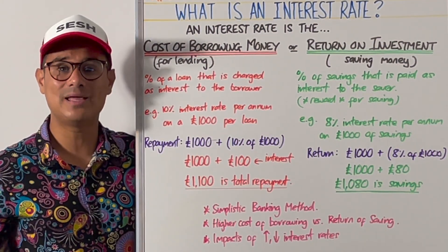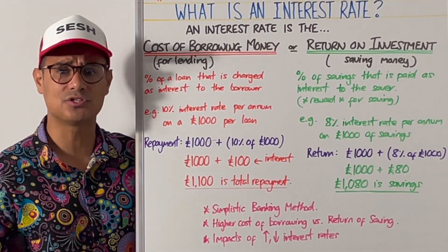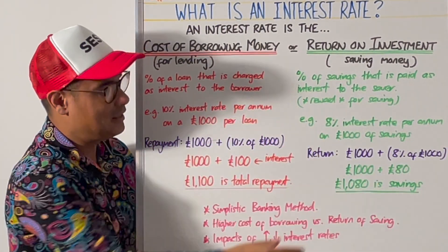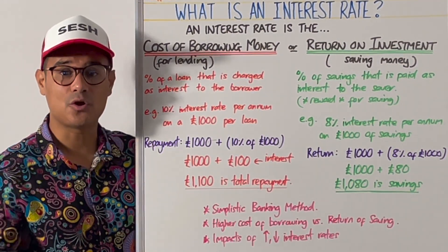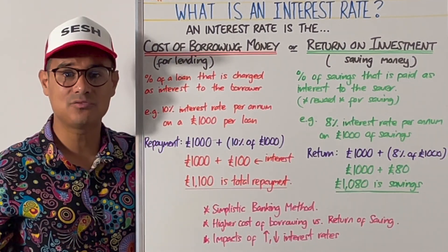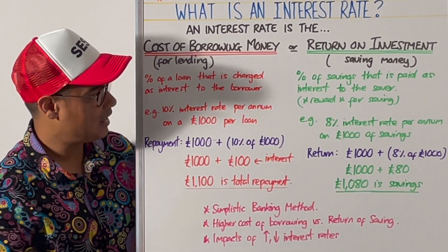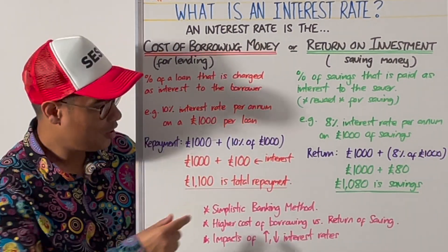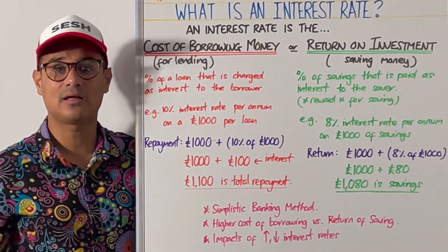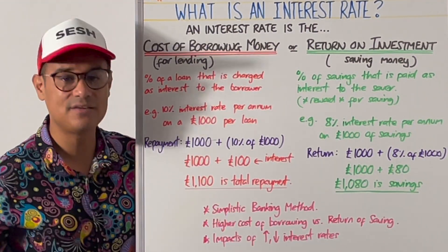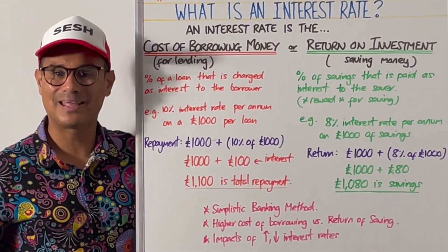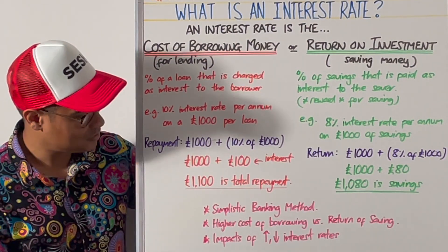Taking a simplistic banking model, a commercial bank like Barclays or Monzo will likely have a higher interest rate for borrowing than the rate offered for saving — that's how a bank makes profits. Someone puts £1,000 in the bank and earns 8%, so the bank pays out £80. The bank then loans out that £1,000 at 10%, making £100. After paying £80 back to the saver, the bank keeps a £20 margin. That's how a bank makes money, though modern banking is more complex with derivatives and so forth.